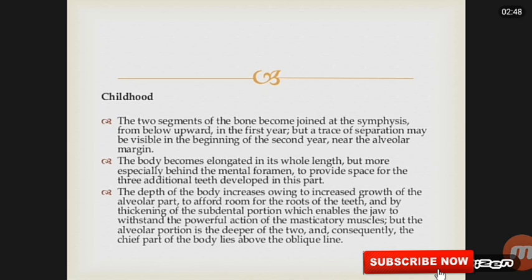The depth of the body increases owing to increased growth of the alveolar part to afford room for the roots of the teeth, and by thickening of the subdental portion which enables the jaw to withstand the powerful action of the masticatory muscles. The alveolar portion is the deeper of the two, and consequently the chief part of the body lies above the oblique line.